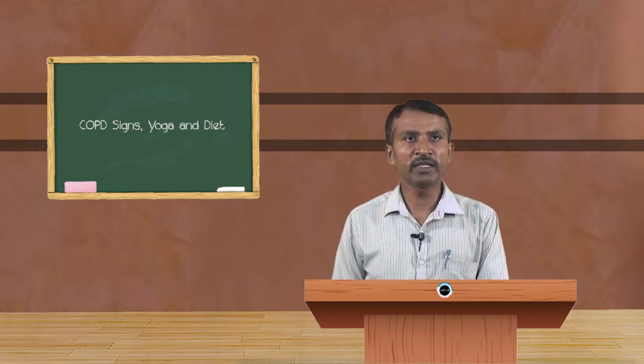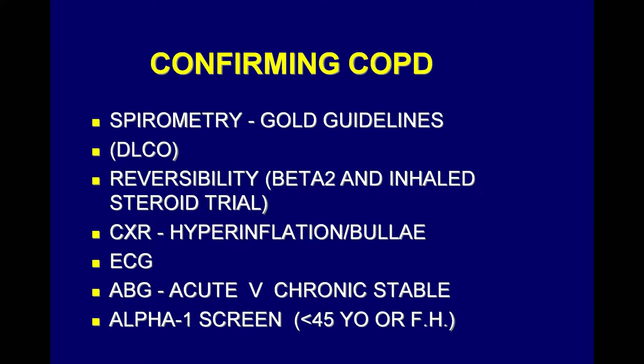Confirming COPD — the main line of confirming COPD is by spirometry. That is one of the gold standard tools that guides us regarding how much oxygen the person is getting, or whether oxygen is reaching the lungs and thereby reaching the required part of the body.